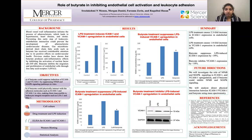To give a background, endothelial cells line the lumen of all blood vessels, which determines the blood vessel diameter and blood vessel wall inflammation. Blood vessel wall inflammation initiates the process of atherosclerosis, which can lead to various other cardiovascular diseases like hypertension and stroke. So if we prevent this initial leukocyte and endothelium interaction, we could prevent atherosclerotic cardiovascular diseases.